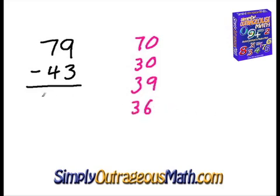So our answer is 36. Once again, we have 70 here minus 40 is 30. Then we go back up here and that's plus 9, so that's 39. And 39 subtract 3 will give us our answer of 36.